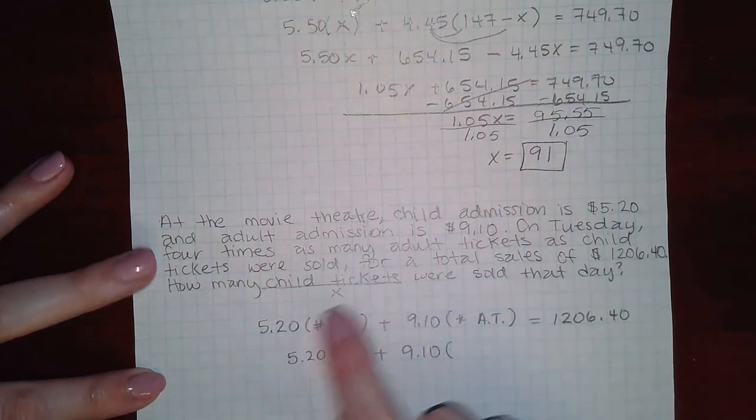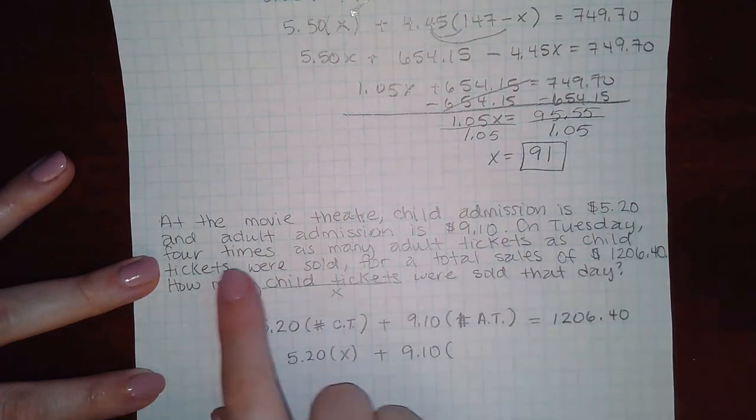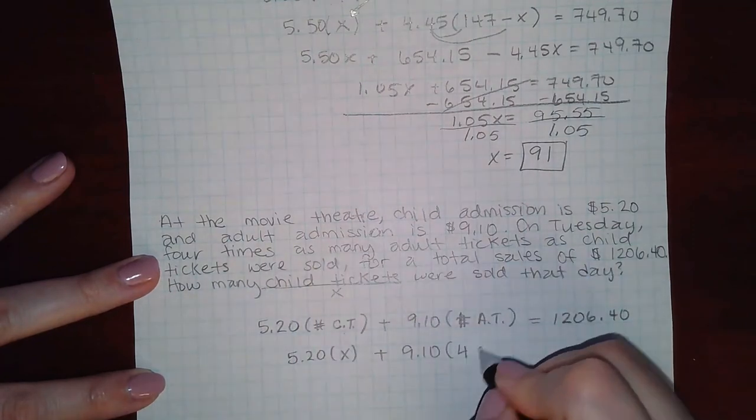And then here, we would use that extra information they gave us to their relationship. So it said there were four times as many adult tickets as child tickets. So this would be 4X.